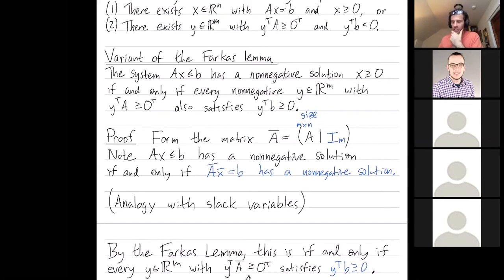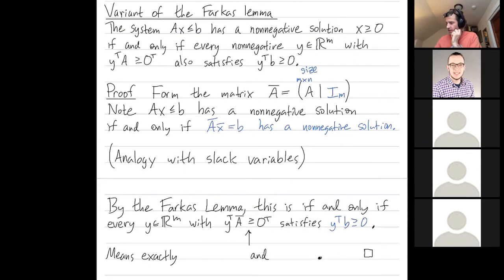And now I can reinterpret what y transpose A bar being non-negative in every entry means. This just means exactly, well, first look at the portion coming from matrix A. Right, the portion coming from this block is telling me that y transpose A is non-negative. And then the portion coming from this block is telling me that every entry in y is non-negative.